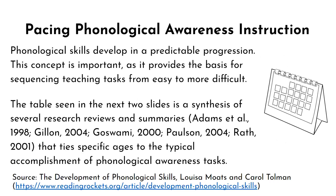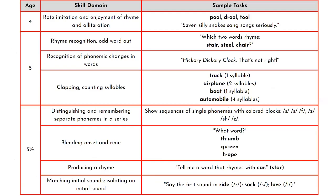Phonological skills develop in a predictable progression, which provides the basis for sequencing teaching tasks from easy to more difficult. A synthesis of several research reviews ties specific ages to the typical accomplishments of phonological awareness tasks. The first slide shows ages four through five and a half, while the second shows ages six through nine. It's not a lockstep skill sequence—rhyming skills are taught in a progression from simple to complex, but spiraled in among other phonological awareness skills.